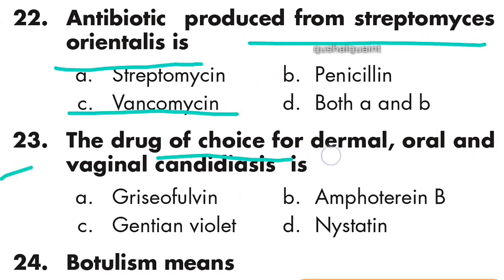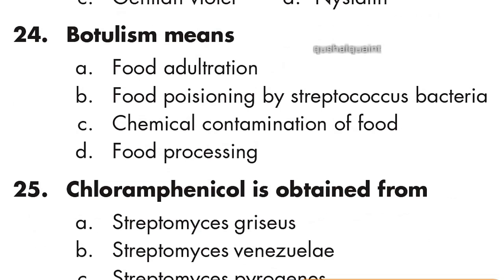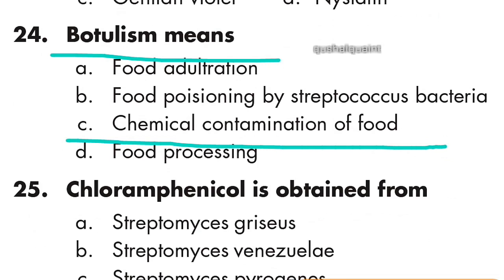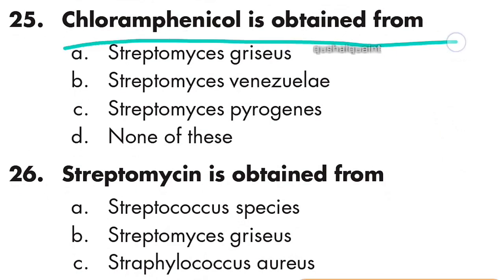Question 23: The drug of choice for dermal, oral, and vaginal candidiasis is Nystatin. Option D is right. Question 24: Botulism means chemical contamination of food. Option C is right. Question 25: Chloramphenicol is obtained from Streptomyces venezuelae. Option B is right.